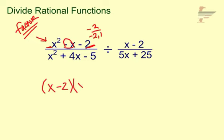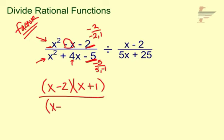x - 2 and x + 1 divided by... Now, this bottom one, we look at the -5 and say factors of -5 that add up to a positive 4. And then we come up with 5 and -1. So x + 5 times x - 1.